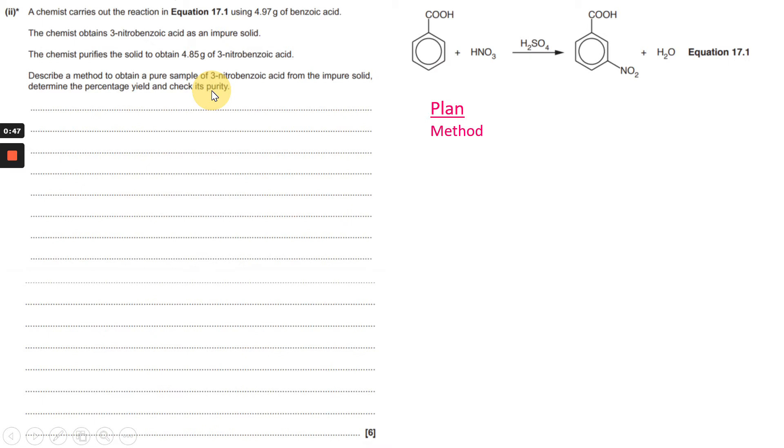So I'm going to put some points down that come to mind about how I'm going to construct my answer as a little plan before I actually write the answer in the answer box. I need a percentage yield calculation done and also I need to check the purity.